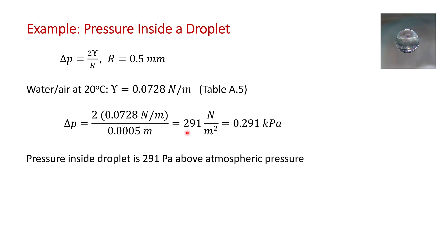That's the pressure difference between the inside and outside of the droplet. The inside of the droplet is 291 pascals above atmospheric pressure.